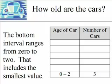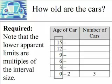So the bottom class interval is 0 to 2 — that's 0, 1, and 2, an interval size of 3 — and there are 3 cars in it. From here, all class interval lower apparent limits will be multiples of 3: 0, then 3, then 6, then 9, then 12, then 15. You can check your grouped frequency distribution by looking at those lower apparent limits and confirming they're all multiples of your interval size. If they are, you're good to go; if not, stop and figure out what to do instead.